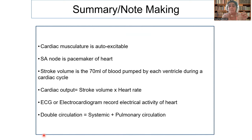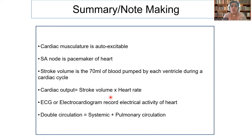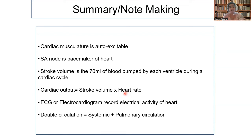Cardiac output is stroke volume into heart rate. The normal heart rate is 72 times per minute. Stroke volume is the blood pumped for one heartbeat, whereas cardiac output is the amount of blood pumped per one minute. So cardiac output is 70 ml × 72, which is about 5000 ml — nearly 5 liters — which is the amount of blood pumped out per minute.